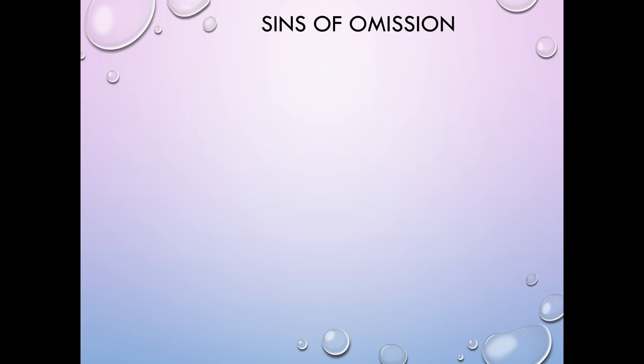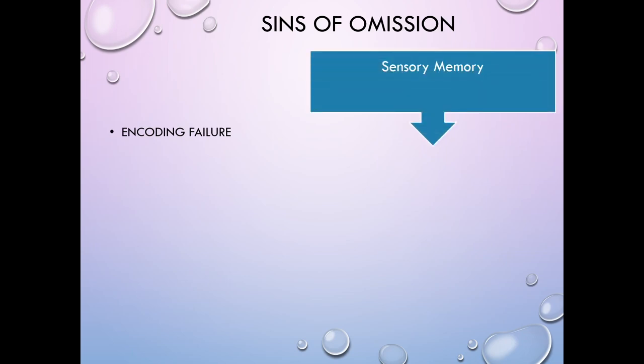Now the sins of commission would be including something that is incorrect. So you're actually committing an error here by including something that shouldn't be there. So let's start with the sins of omission, because as you might've noticed, we have more of those. The first one being encoding failure.